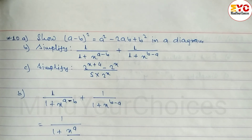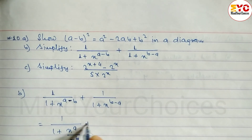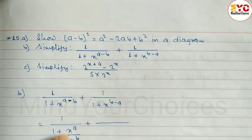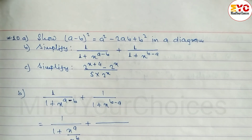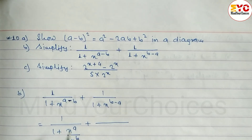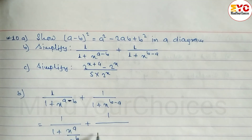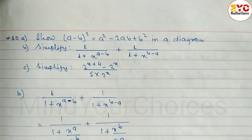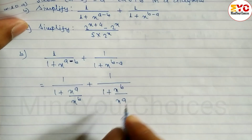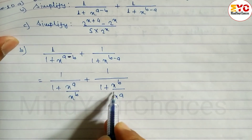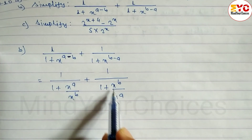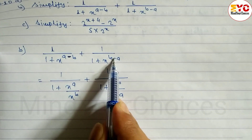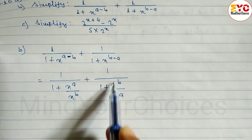So we take x to the power A divided by x to the power B. When the base is the same and we divide, we subtract the powers. So x power A by x power B, and similarly x power B by x power A — when base is same and dividing, subtract the powers.